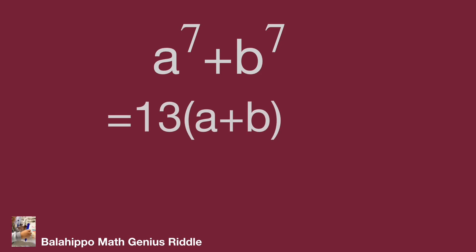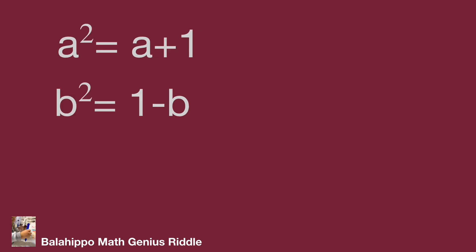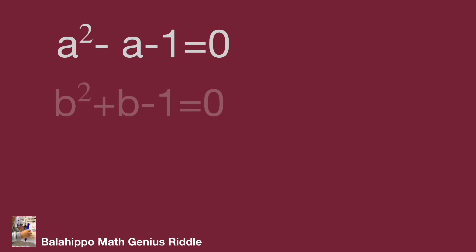It will become easy to find the value of a and b. a squared equal to a plus one. Move all the terms to the same side. The equation we got is a squared minus a minus one equal to zero, and b squared equal to one minus b. Then we get b squared plus b minus one equal to zero.